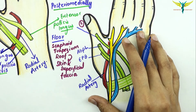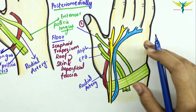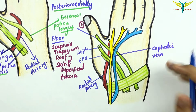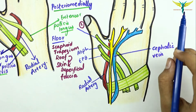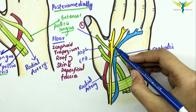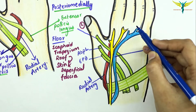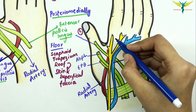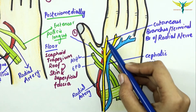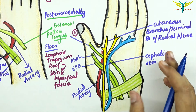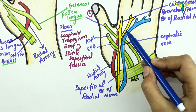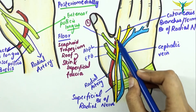The structures crossing the roof deep to the skin include the cephalic vein — shown in blue — which crosses the roof deep to the skin. There are also the terminal branches of the radial nerve, passing from the lateral side to the medial side. These are the cutaneous branches of the superficial radial nerve. This superficial branch of the radial nerve gives cutaneous or terminal branches onto the roof of the anatomical snuff box.